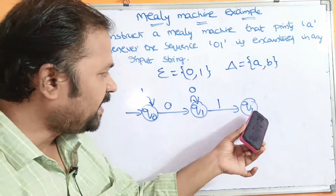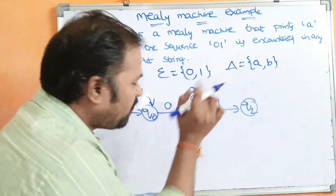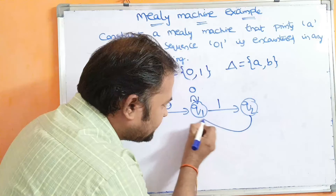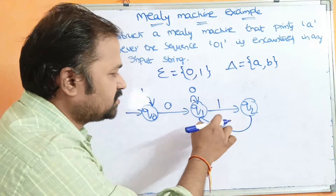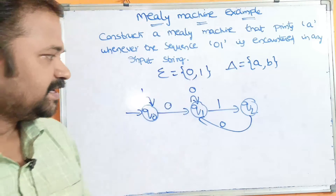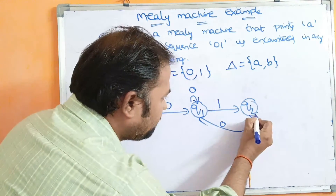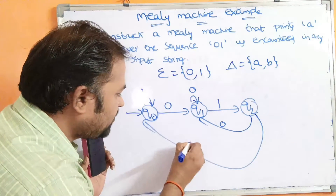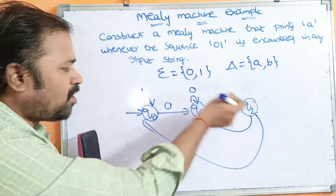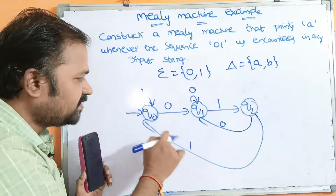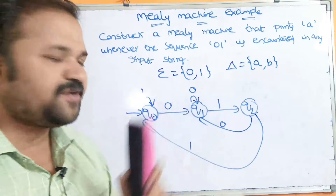Next, we have to apply 0 and 1 on Q2. We can apply 0 on Q2 like this — going back, since after receiving the sequence 0,1 we can have another 0 starting a new potential sequence. We can also apply 1 on Q2. After this 1 in Q2, we can have a 0,1 combination again. So this is the completed DFA structure.